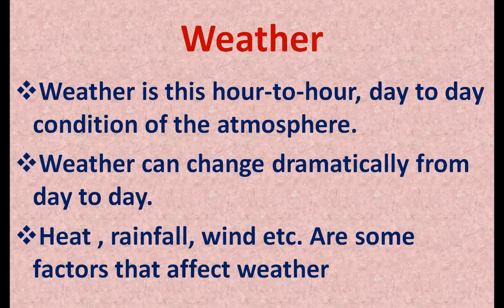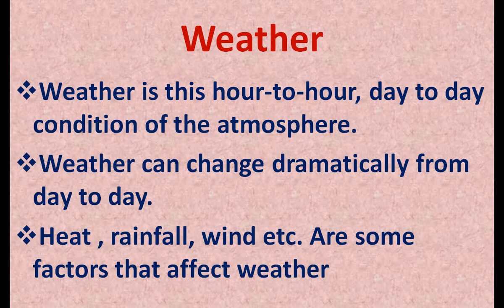In our previous lecture we studied about atmosphere and its structure. Our earth is surrounded by a thick layer of various gases and other particles. This envelope of air is known as the atmosphere. The atmosphere is divided into 5 different layers. The troposphere is the lowest and densest layer, extending up to a height of 16 km. All weather changes and weather phenomena occur in this layer.